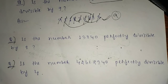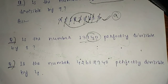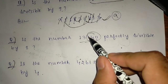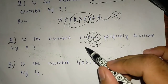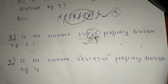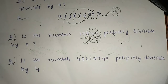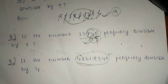This is the number 13840, which is perfectly divisible by 8. This number has 5 digits. Now, the number 42612940 is perfectly divisible by 4. The number 8 also divides into the remainder examples discussed.